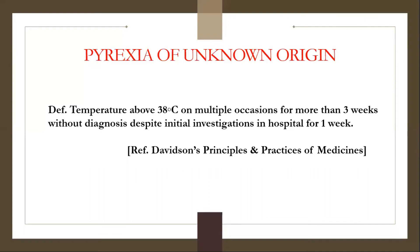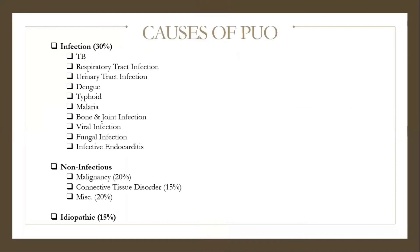Pyrexia of unknown origin is defined as temperature above 38 degrees Celsius on multiple occasions for more than 3 weeks without diagnosis, despite initial investigations in hospital for 1 week. Causes include: infections (30%) — tuberculosis, respiratory infection, immunodeficiency-related infections, dengue, typhoid, malaria, bone and joint infections, viral and fungal infections, infective endocarditis. Non-infectious causes include malignancy (20%), connective tissue disorders (15%), and miscellaneous (20%). Idiopathic causes constitute 15%.